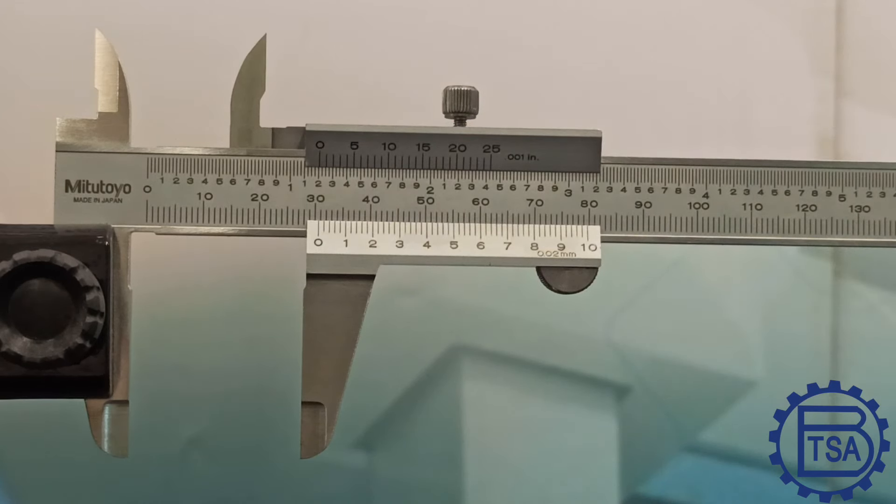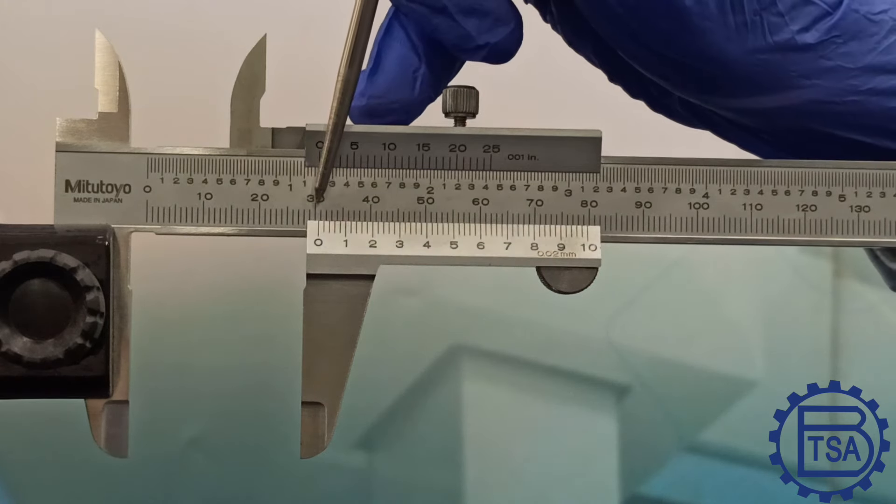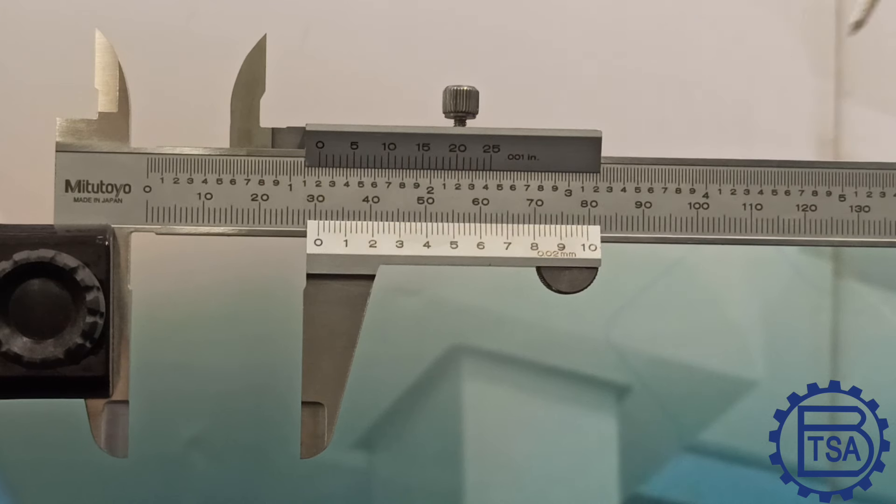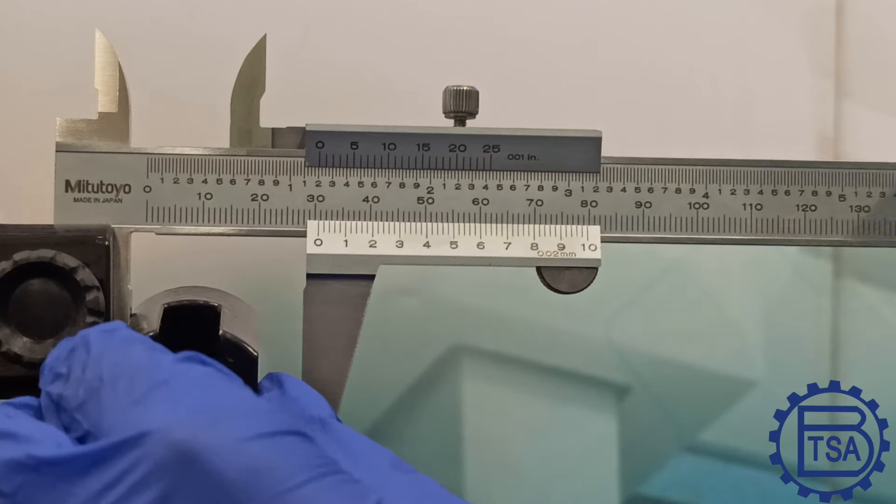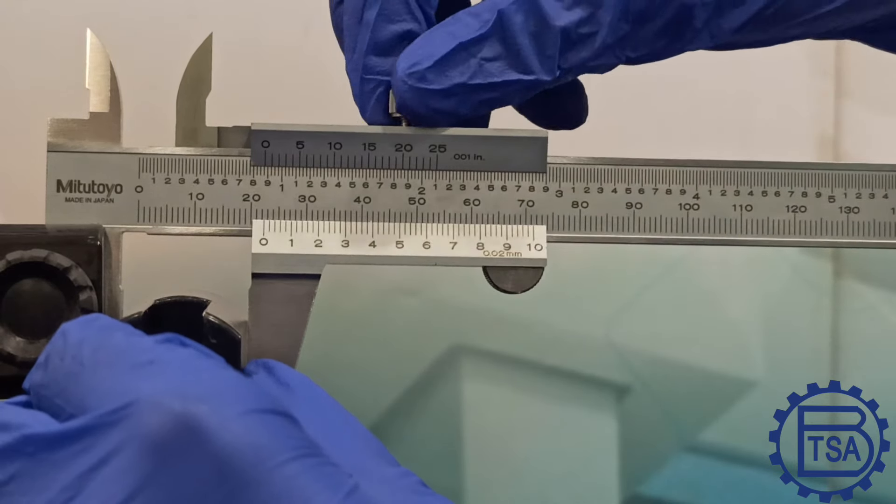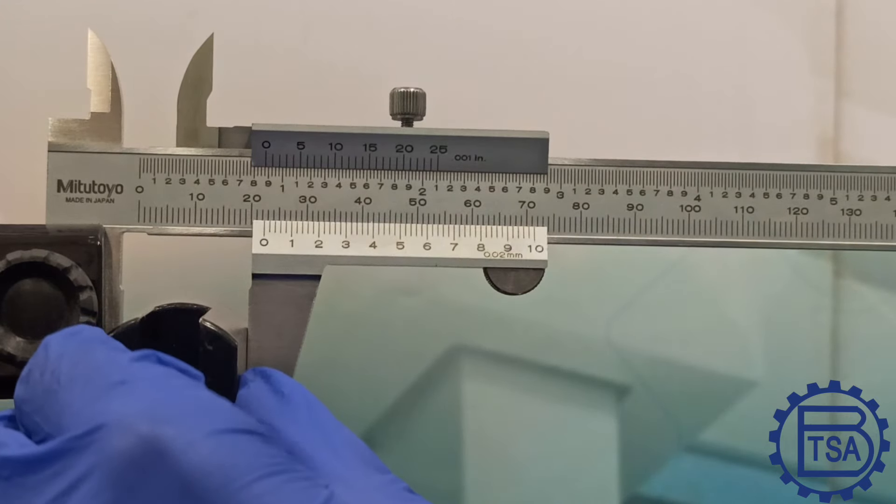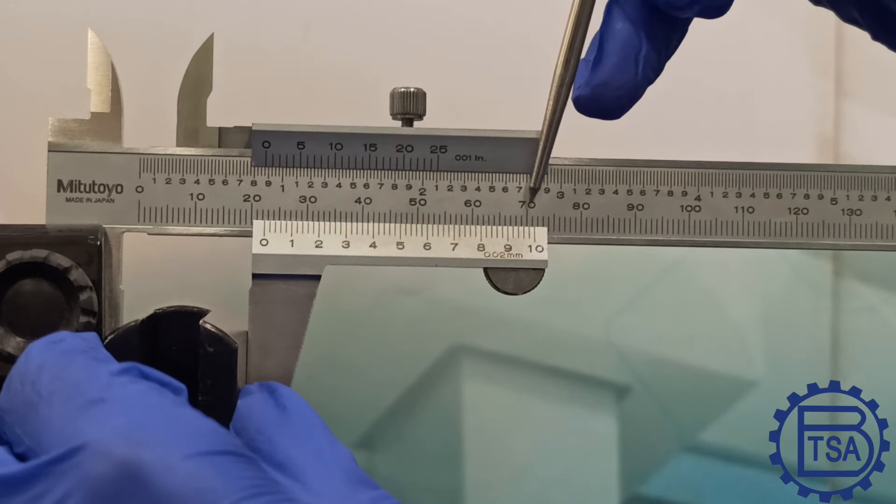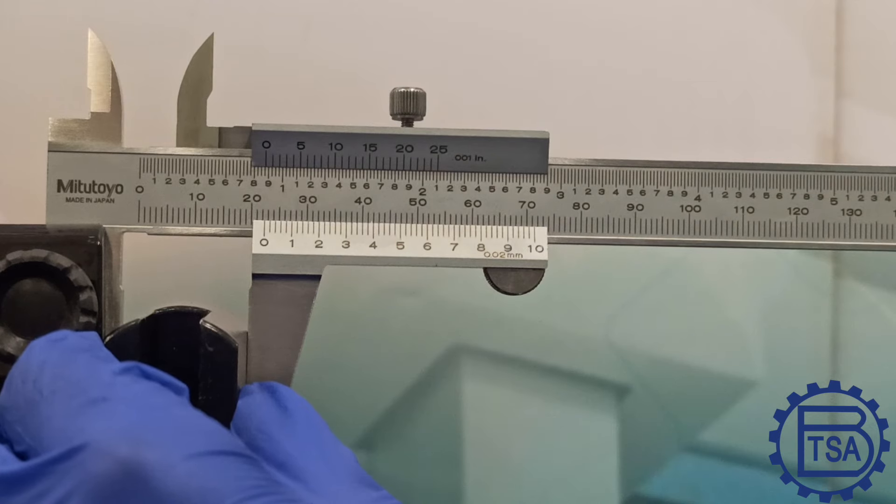I will also show you how to measure using external jaws, internal jaws, step measuring phases and depth bar. Now let's measure the value on the caliper using external jaws. As you can see, the value on the main scale is 30 mm. On the vernier scale, check which line is coinciding with the lines on the main scale. Here, it's 0.62 mm. So the final reading is 30.62 mm. Now let's measure a component. Try to find out the value of the component measured. I will wait for you to calculate the reading. The main scale reads 22 mm and the vernier scale reads 0.36 mm. Hence the value is 22.36 mm.